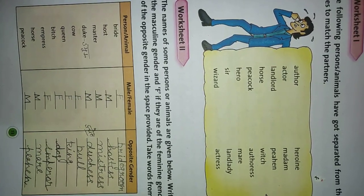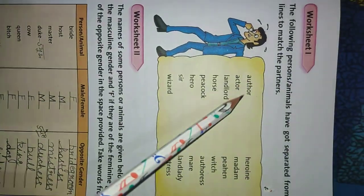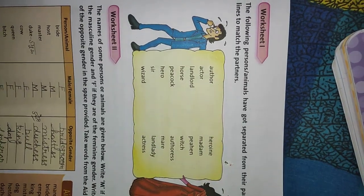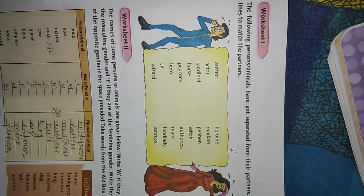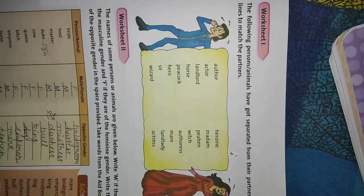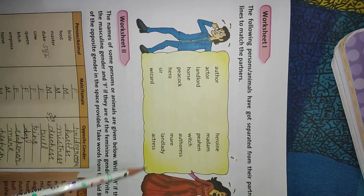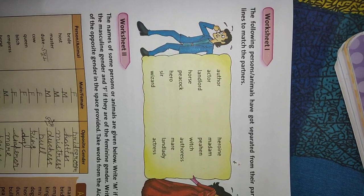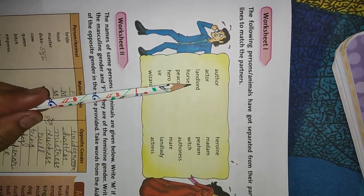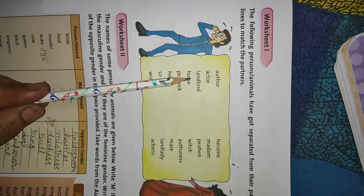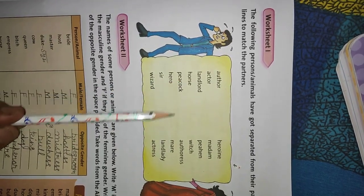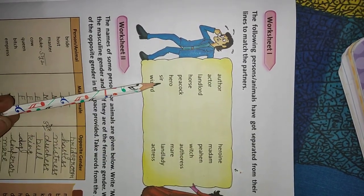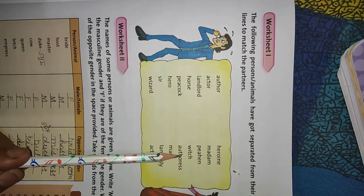Now look at worksheet one. The following persons and animals have got separated from their partners. You have to draw lines — or write the number — to match the partners. The first one is Author — its opposite gender is Authoress. Actor — Actress. Landlord — Landlady. Horse — Mare. Hero — Heroine. Sir — Madam. Wizard — Witch.